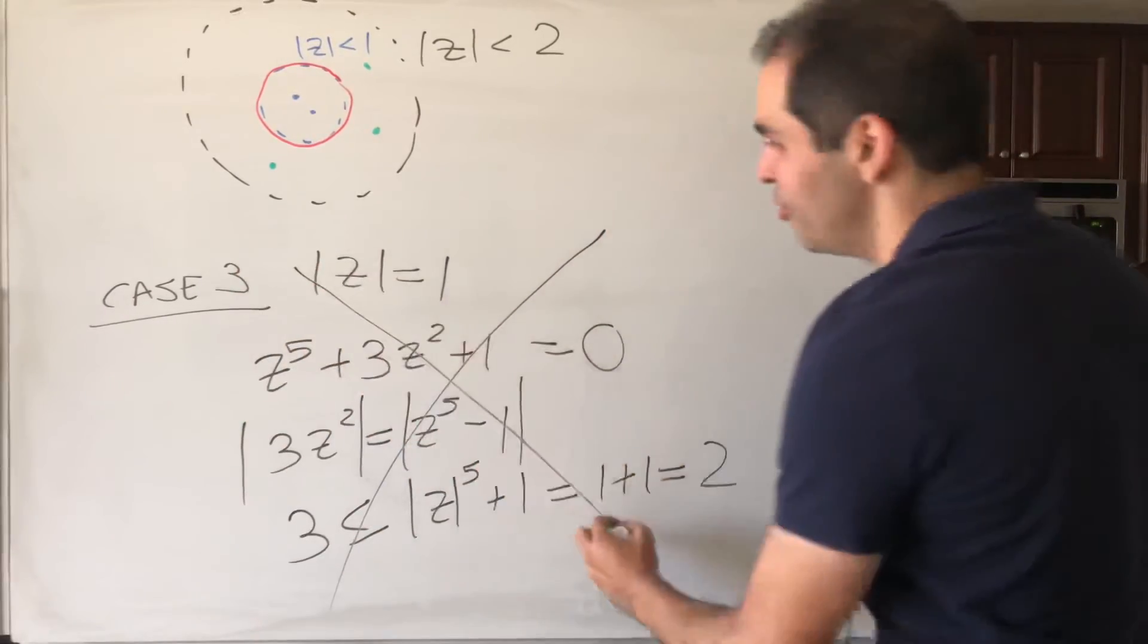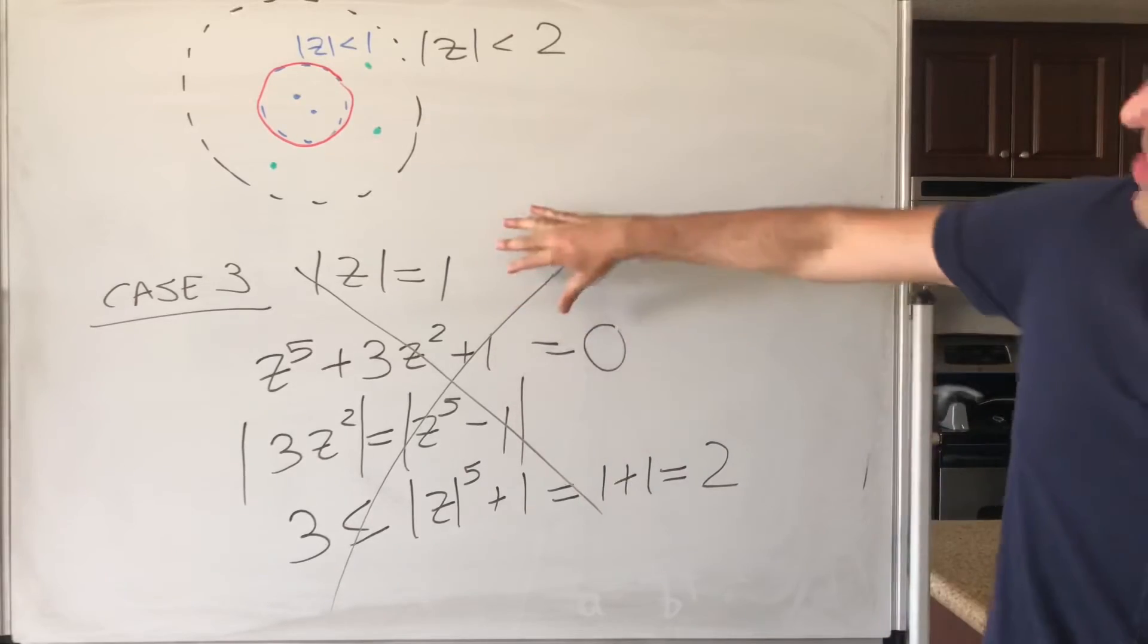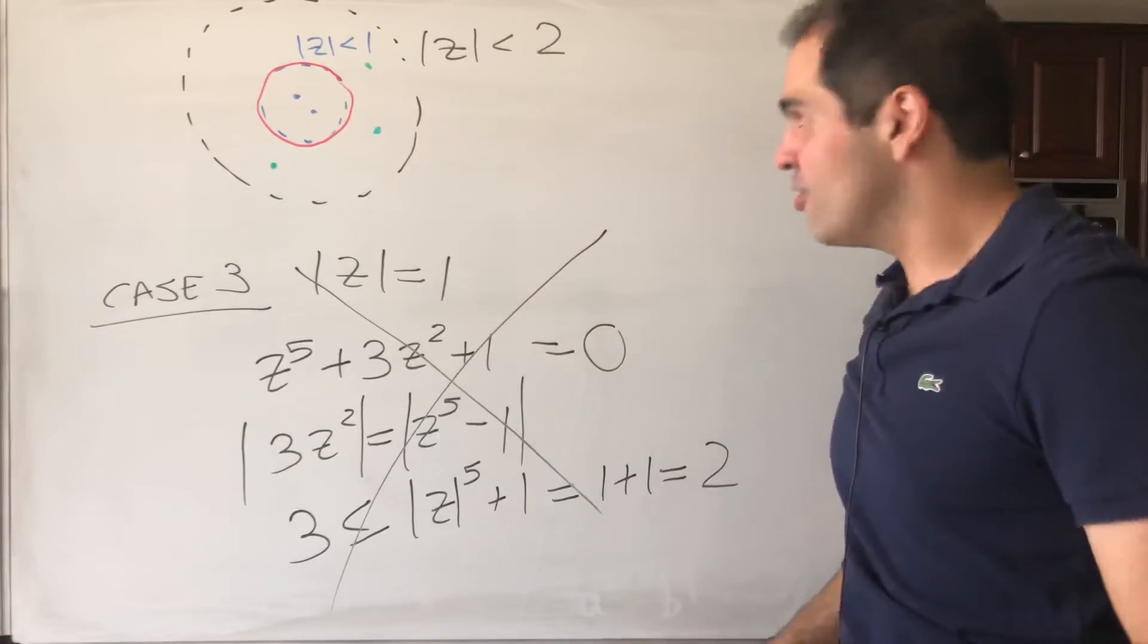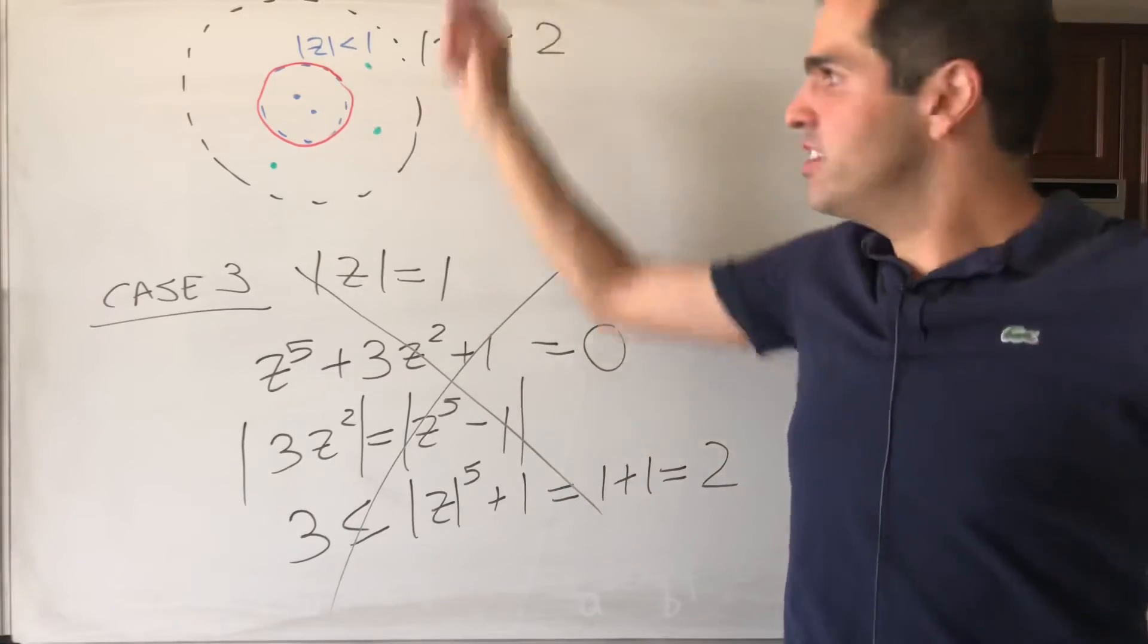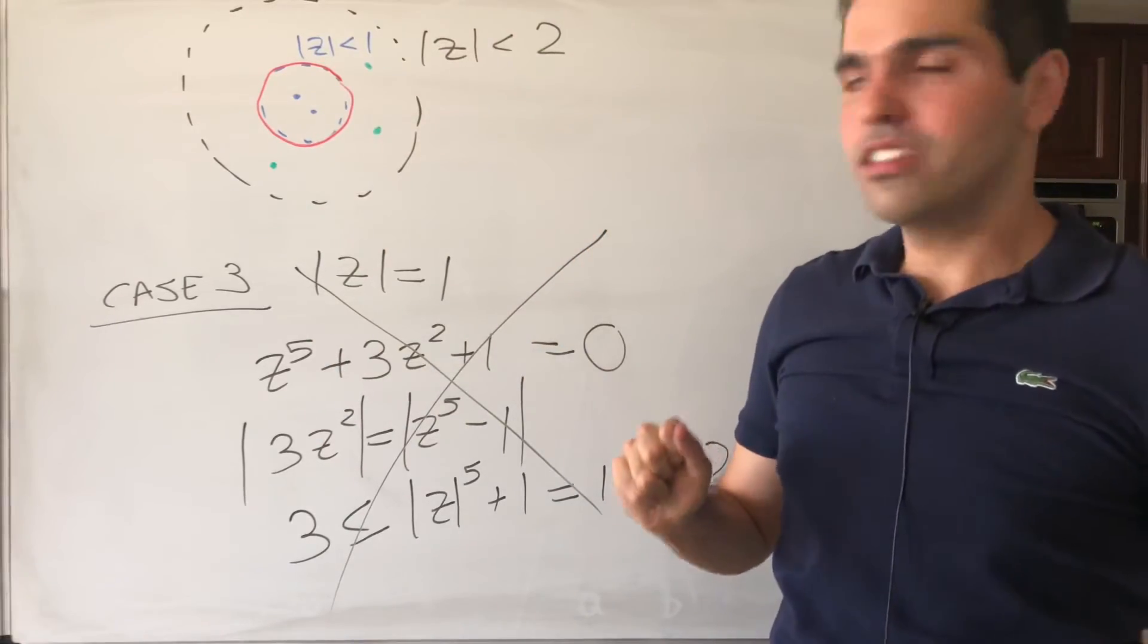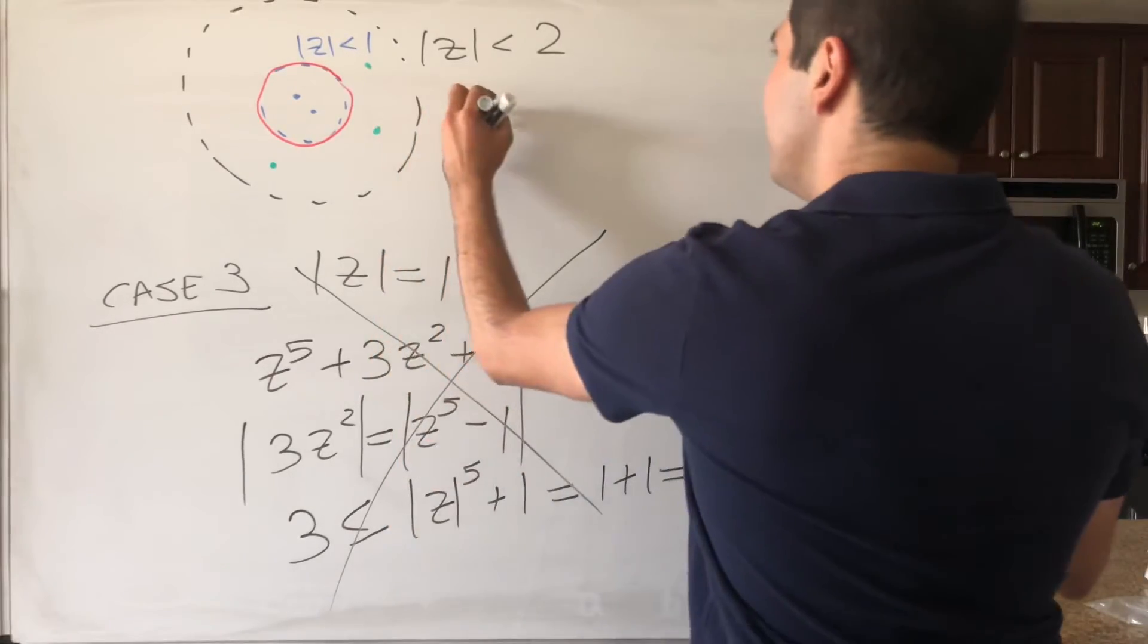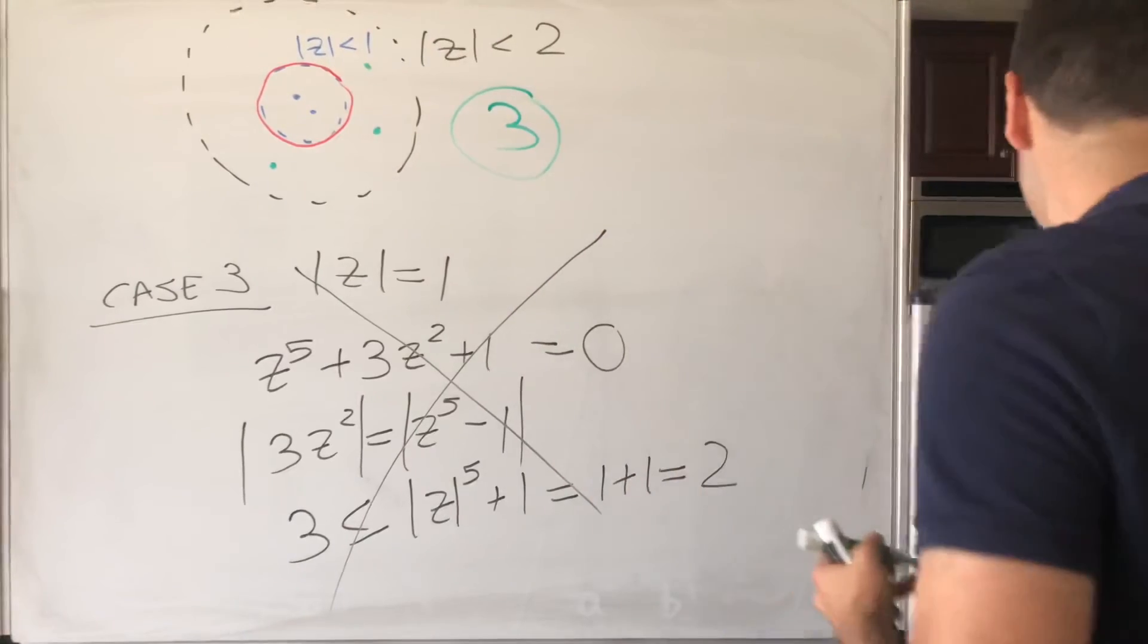So in particular, there are no roots to my heart. Anyway, there are no roots on the circle |z| = 1, so what can we conclude? There are 5 roots in total, 2 inside that circle, so in particular, the answer to the question is 3. There are 3 roots in total in that annulus.